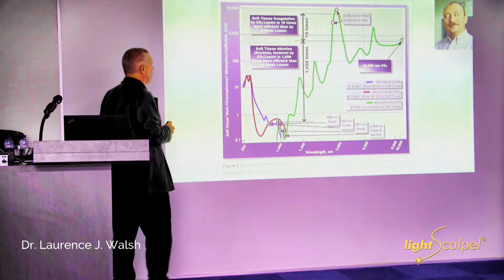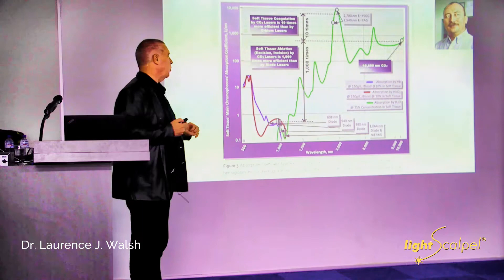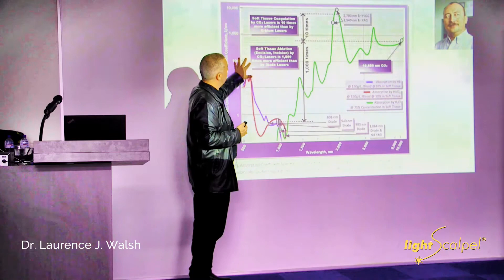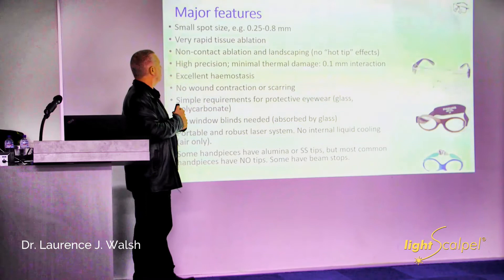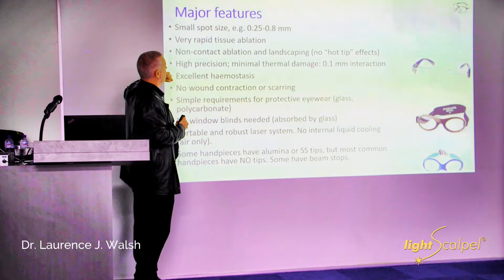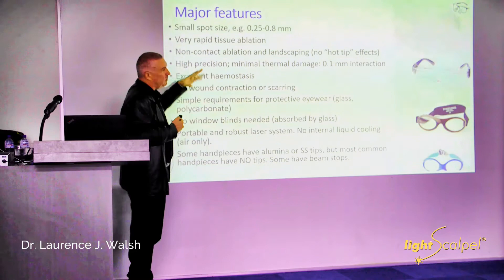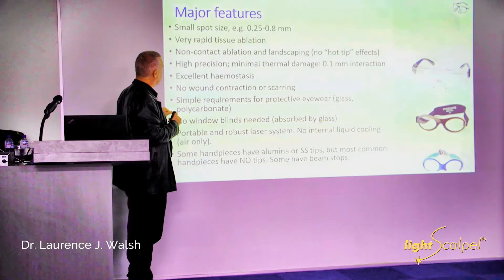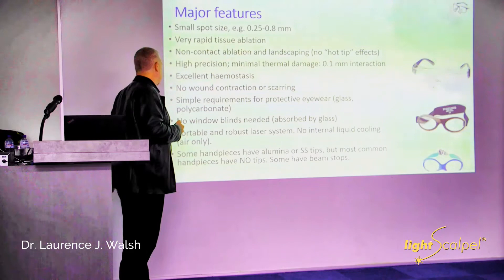Peter will talk about what makes this particular laser system different from other wavelengths, and why the ablation is quick. For me as a user with 30 years' experience, what I like is a very small operating spot where I can quickly ablate tissue without touching it — working off the surface with very high precision, normally about a millimetre or tenth of a millimetre of interaction, good control of bleeding, very little contraction or scarring. A very simple requirement — I can just wear my normal loupes with side shields. My patients can wear glass or polycarbonate.